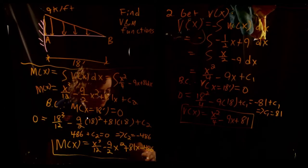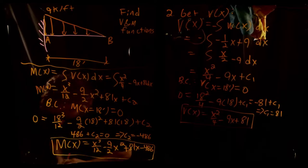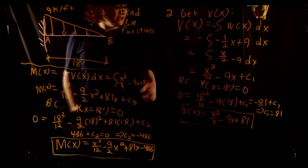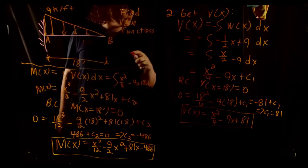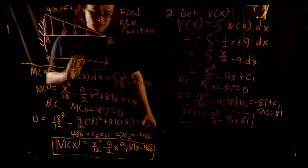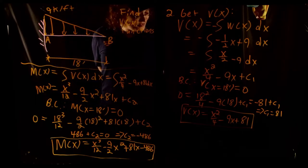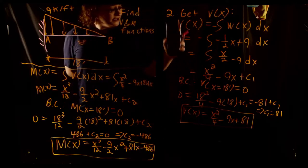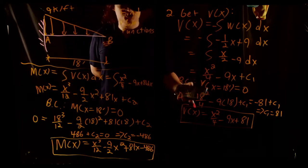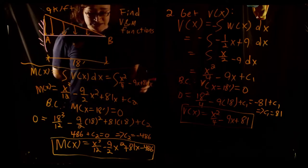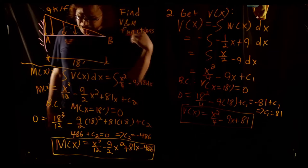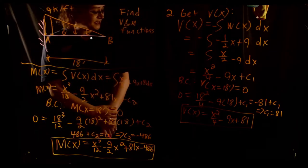That is our moment as a function of x. Through this example we can see our general process: start with w(x) — sometimes given, sometimes derived — then integrate once to get shear, apply a boundary condition to solve C1, then integrate again to get the moment function and apply another boundary condition to find C2. Alright, that'll do it for this example. Let's look at another one.